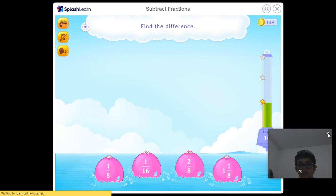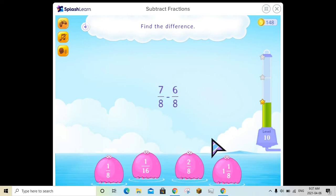I'm just going to try... Find the difference. So now, same thing. 1 over 8, because we subtract 7 minus 6. Leave the denominator the same.